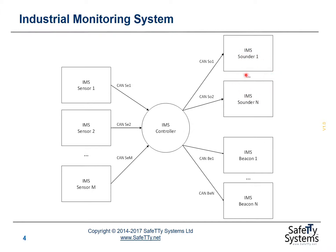The sounder units are basically required to control a high-volume horn, and there are also beacon units that turn on and flash high-intensity lights. There are lots of CAN buses involved. The IMS controller is responsible for receiving information from the sensors and receiving status information from the sounder and beacon units, and it makes all the decisions based on the information it receives.